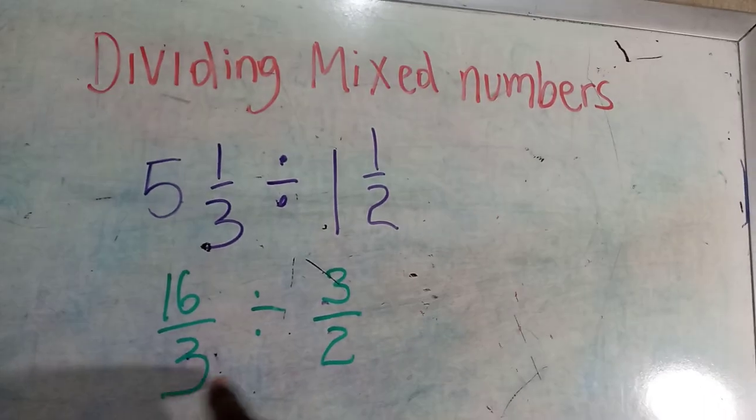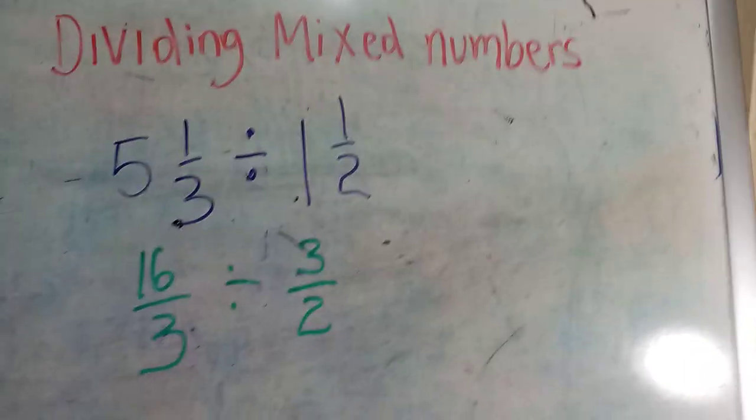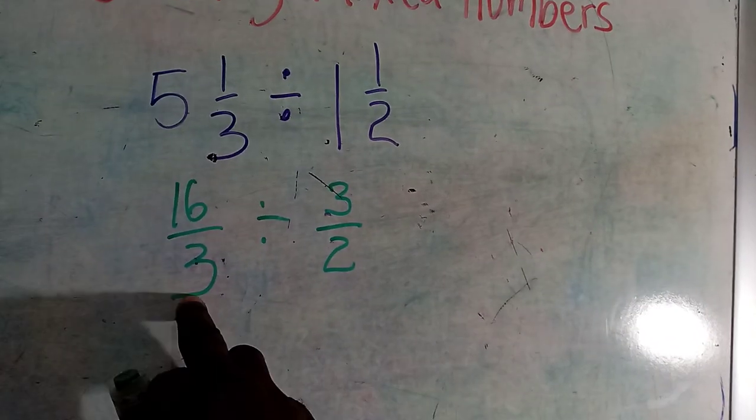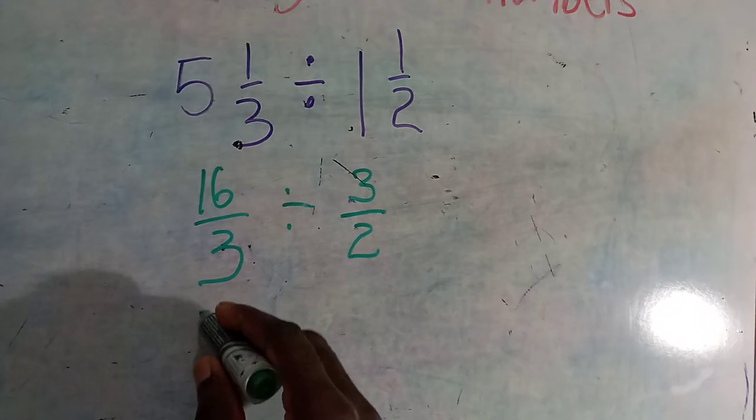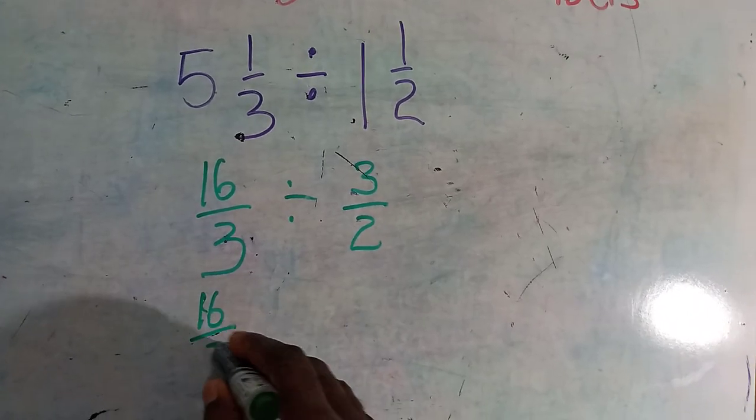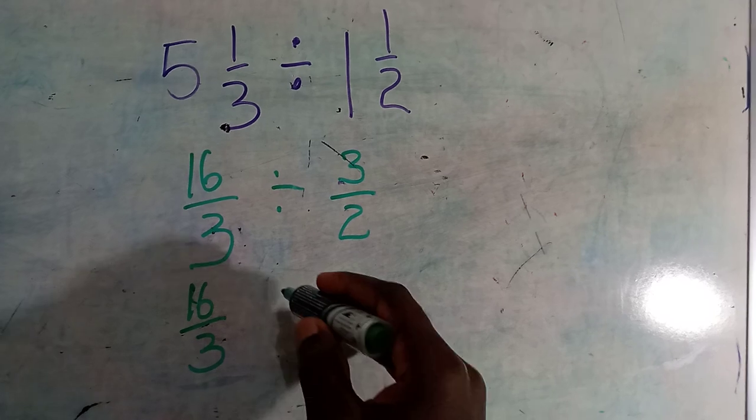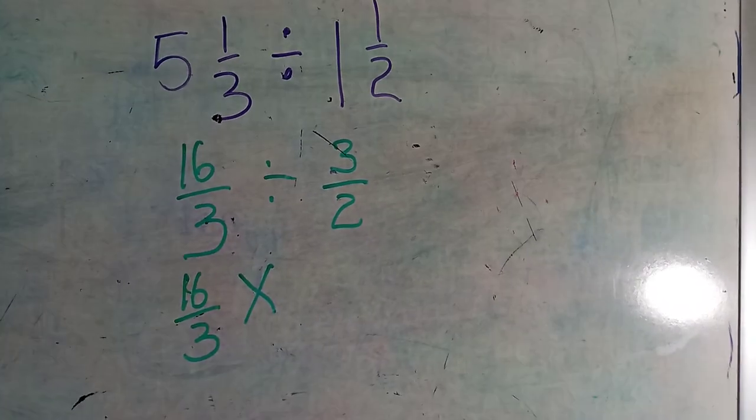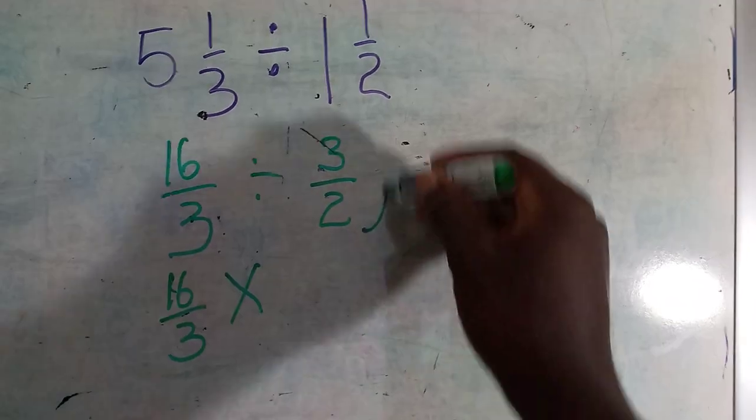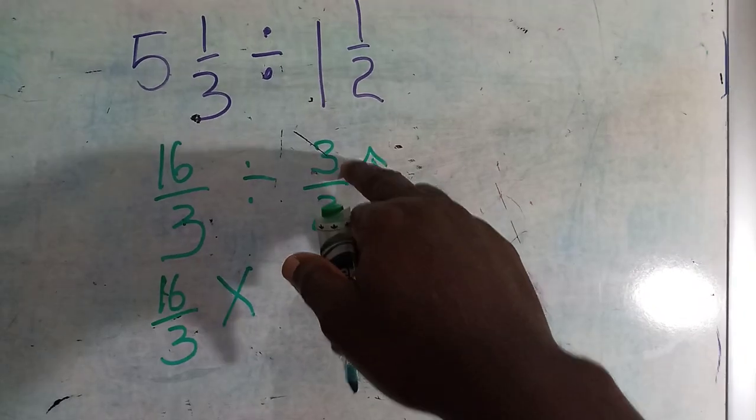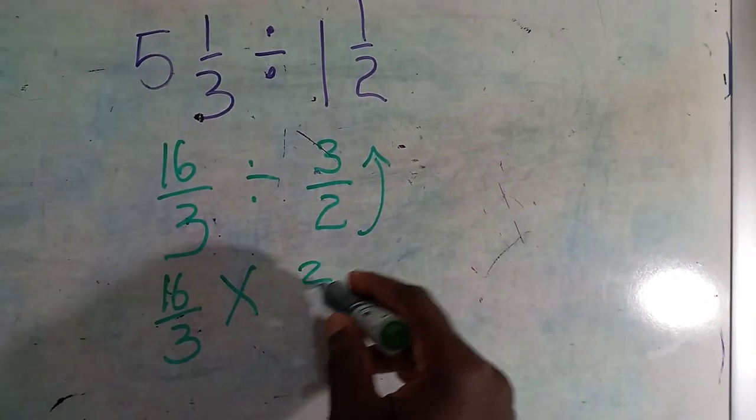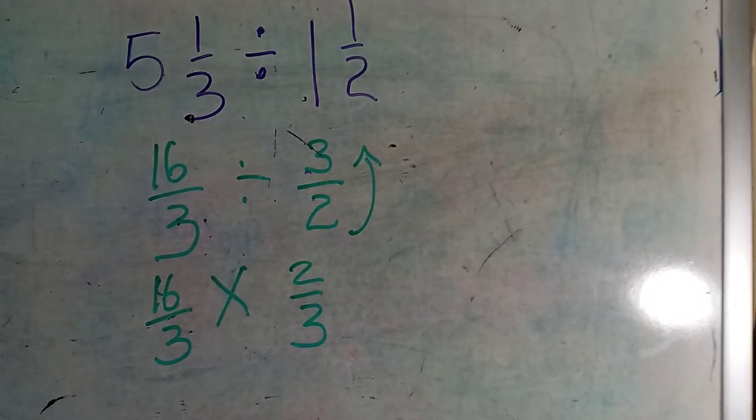Then you're going to keep change flip. After you have turned these into improper fractions, keep change flip. You're keeping the 16 over 3, changing to multiplication, then you invert. You're going to turn the 3 over 2 into 2 over 3.